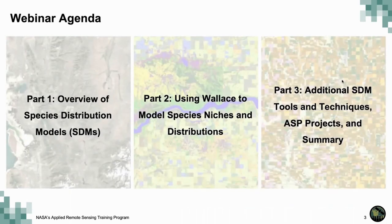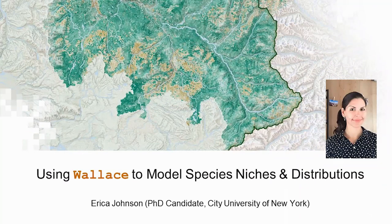This is an overview of the three sessions for this training series. Today we will focus on a tool for modeling species niches and distributions called Wallace. During the final session, we will discuss additional species distribution modeling projects and tools. Now I'd like to hand over the presentation to our Wallace guest speakers.